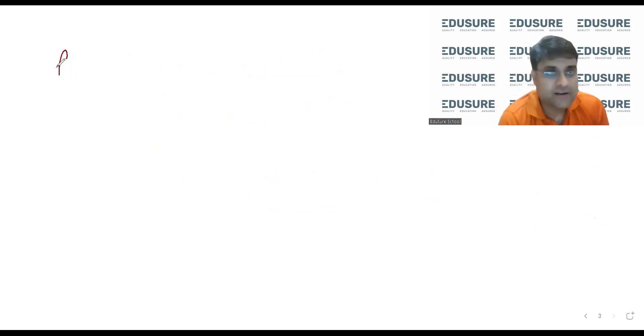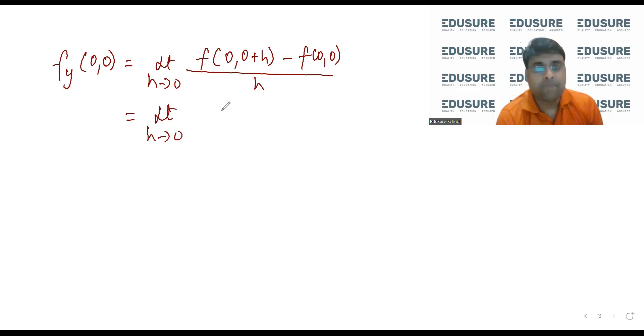Now we'll find the partial derivative with respect to y. You do the same thing, limit h tends to 0, y is changing. Limit h tends to 0, this becomes 0 minus h cube by 0 plus h square minus f(0,0) by h. This will give us minus h minus 0 by h, which comes out to be minus 1.